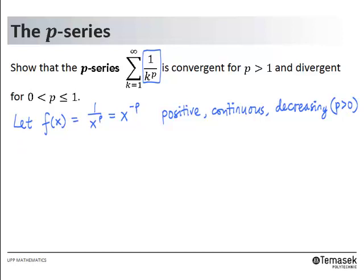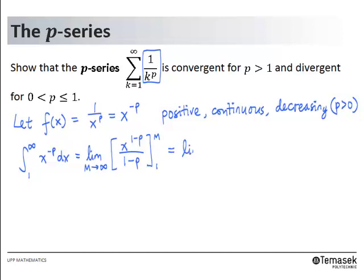We now calculate the integral from 1 to infinity of x to the power negative p dx. This gives us the limit of x to the power 1 minus p over 1 minus p. Simplifying, we get the limit of m to the power 1 minus p over 1 minus p, minus 1 over 1 minus p. We have already seen the case where p equals 1, which is the harmonic series, so now we consider only the case where p is not equal to 1.